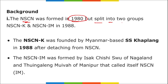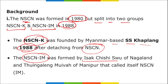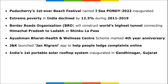The NSCN was founded in 1980 but split into two groups — NSCN-K and NSCN-IM — in 1988. NSCN-K was founded by Myanmar-based S.S. Khaplang in 1988 after detaching from the NSCN group. NSCN-IM was founded by Isak Chishi Swu of Nagaland and Thuingaleng Muivah of Manipur.